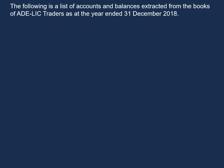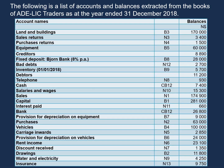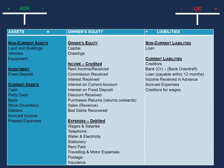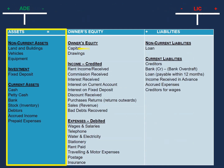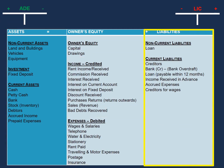Let's have a look at the following. The following is a list of accounts and balances extracted from the books of Adelik Traders as at the year ended 31 December 2018. Before we construct our trial balance, we need to know which accounts should be debited and which accounts should be credited. We should use the following guidelines: our assets, drawings, and expenses should be debited, and our liabilities, income, and capital should be credited in our trial balance.